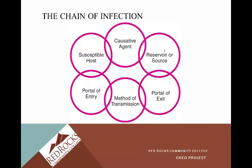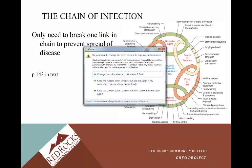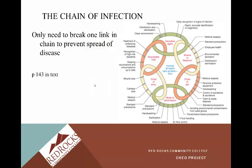The chain of infection is really important, because in order to have infection, you have to have all these different links in the chain: a causative agent, reservoir source, portal of exit, method of transmission, portal of entry, and susceptible host. You only need to break one link in the chain to prevent the spread of disease. This is on page 143 in your text. As healthcare workers, breaking any link in this chain prevents the spread of disease. Hand washing is highlighted at the top of that diagram.